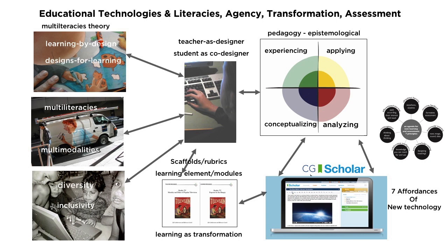To complete the trajectory, we've added here a picture of a platform we've created called CG Scholar, which tries to harness the seven affordances of the new technology. This also encompasses all we understand about knowledge production, about humane classrooms, and about learners achieving their goals — how do we reproduce these values in a digital ecology?